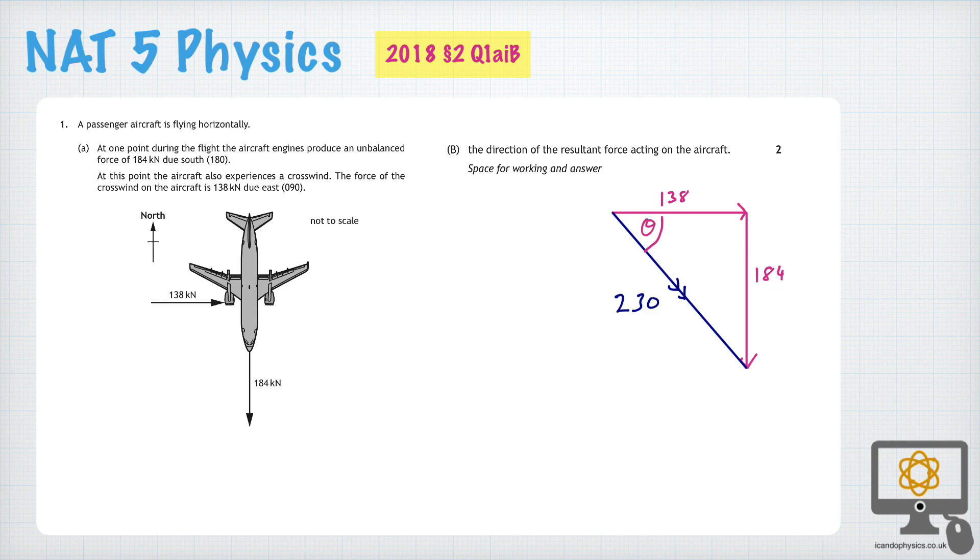And the simple rule that we would use, the trig rule, would be the tan of theta is the opposite over the adjacent of that angle. And the opposite is 184, and the adjacent is 138. So the tan of theta would be 184 over 138. And when we solve that for theta, we get 53.1 degrees.